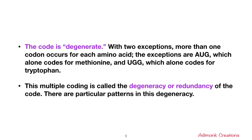The next property is that the code is degenerate, with two exceptions: more than one codon can occur for each amino acid. The exceptions are AUG, which alone codes for methionine, and UGG, which alone codes for tryptophan. This multiple coding is called degeneracy or redundancy. In other words, a single amino acid can be coded by multiple codons.